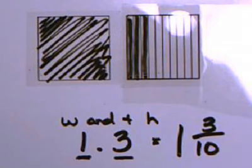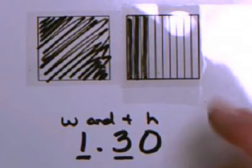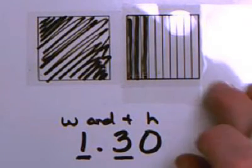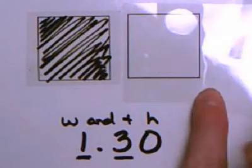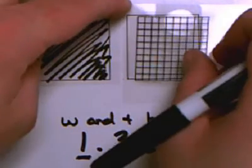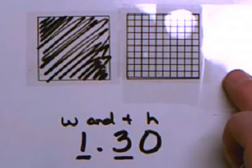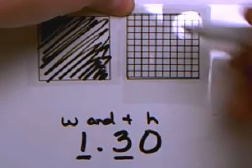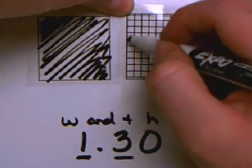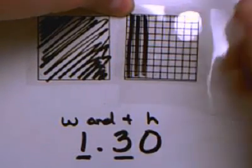If I wanted to change this to 1 and 3 hundredths, I would also need to change my picture. I would take my tenths away, and instead of splitting it into 3 tenths, I need to split it into 30 hundredths. So my box, I'm going to cut into 100 equal pieces, and I will need to shade 30 of those pieces. Because I know 10 are in each row, I can shade 10, 20, 30 hundredths.